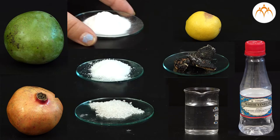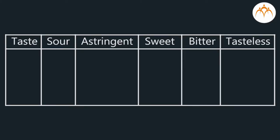Let's try these one by one. Taste each item, test it, and write the test types: sour, astringent, sweet, bitter, tasteless.